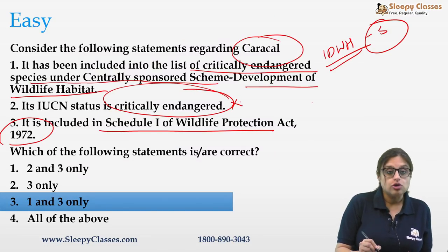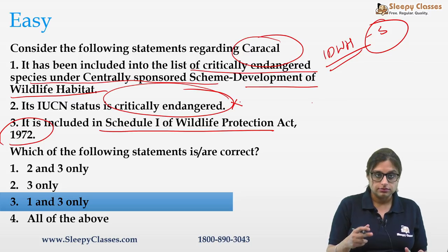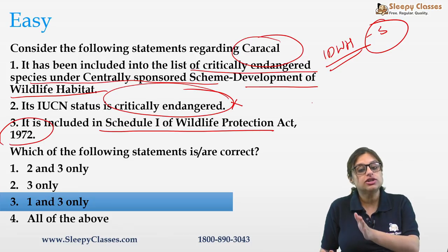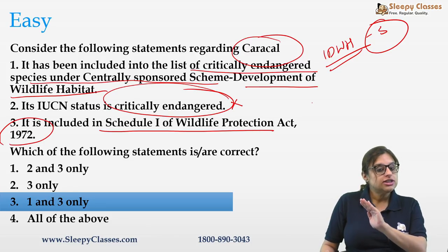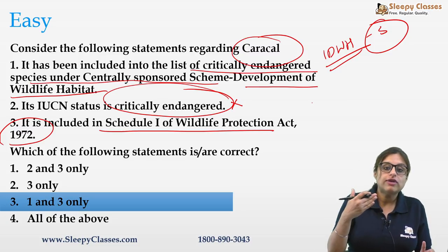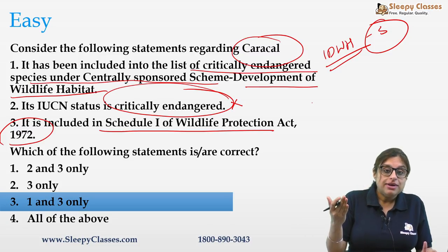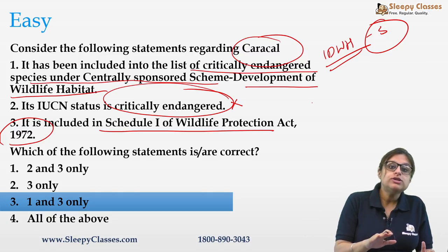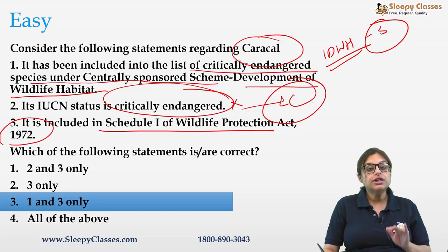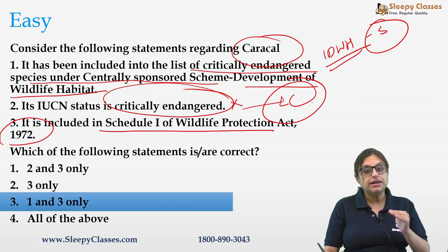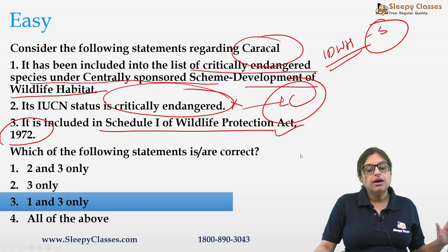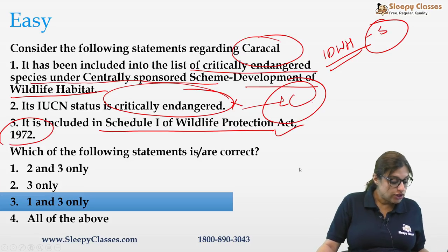The second statement is wrong. Even though Karakal has been included in the species recovery program — a component of integrated development of wildlife habitat — its IUCN status is least concern, not critically endangered. The third statement is correct: it is part of Schedule 1 of the Wildlife Protection Act.